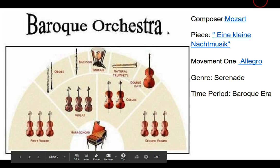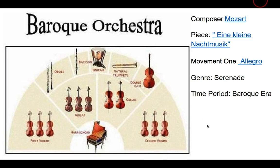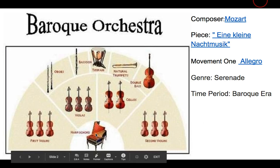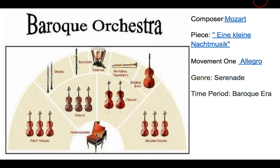In this first slide we see a picture of the baroque orchestra. In the center is a harpsichord, which is a type of keyboard instrument with strings inside and picks that actually pluck the strings. So it gives you a different feeling than the piano. It is also the predecessor to the piano.